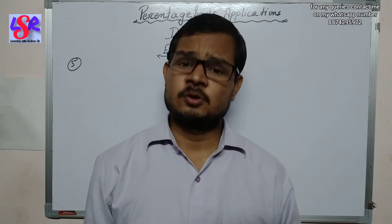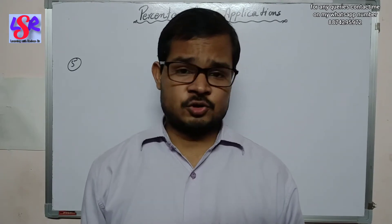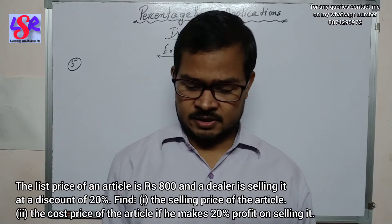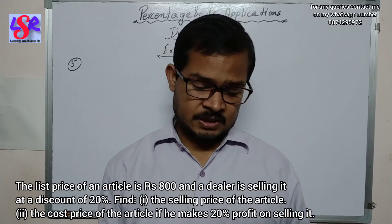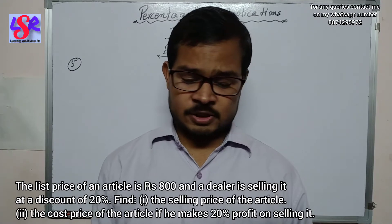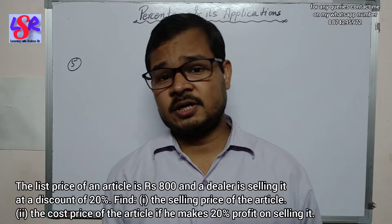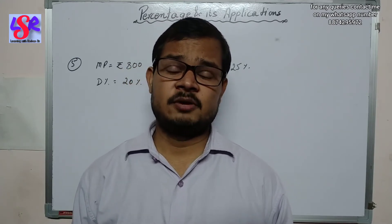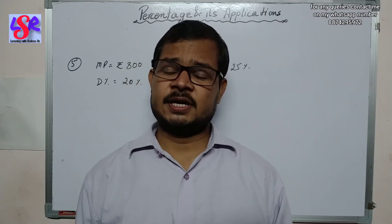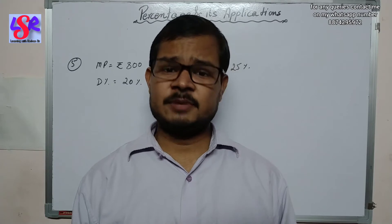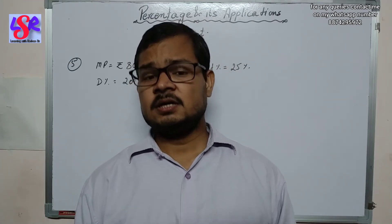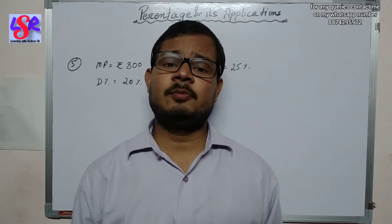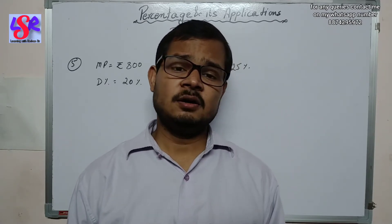Now let's move to question number five. The list price of an article is rupees 800 and the dealer is selling at a discount of 20%. Find the selling price of the article and the cost price if he makes a profit of 25% on selling it. In this question we have been given mark price, discount percent, and profit percent. So first we will find the selling price using mark price and discount percent, then find the cost price.